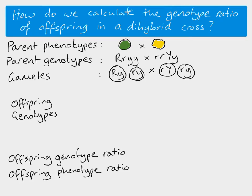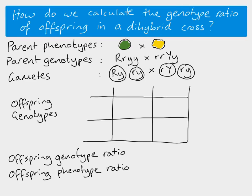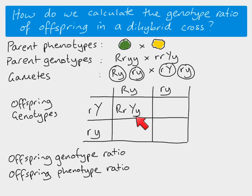The next thing is to calculate the genotypes — it's exactly the same as what we've done before. We just do our Punnett square and put our gametes in. The gametes from one parent go on the top and the gametes from the other parent go on the side. Then we just put them together and work out our offspring genotypes. So the first one here: big R, little R, big Y, little Y. Just check that when you do this, your offspring genotype has to have two alleles from one gene and two alleles from the other gene — so in total four alleles, the same as our parents had.